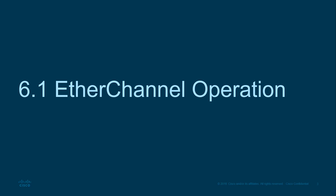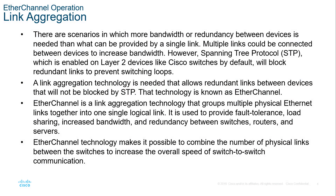What is EtherChannel operations? There are scenarios in which you need more bandwidth. You have a switch that has a ton of access or end-point devices connecting to it, and they are sending lots of data. So how do we increase bandwidth? We could always buy a new switch that has additional speed, but what happens when we don't have the budget for that? We can actually take multiple links and combine them — this is what link aggregation is all about.